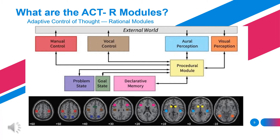The eight modules in ACT-R are: first, manual control; second, vocal control; third, oral perception; fourth, visual perception; next, problem state; goal state; declarative memory; and procedural modules. Manual control and vocal control are under performed action. Manual control directs the motor module how to output actions to the world. Vocal control provides the model with the ability to speak — the speak command is dependent on the text to be spoken.